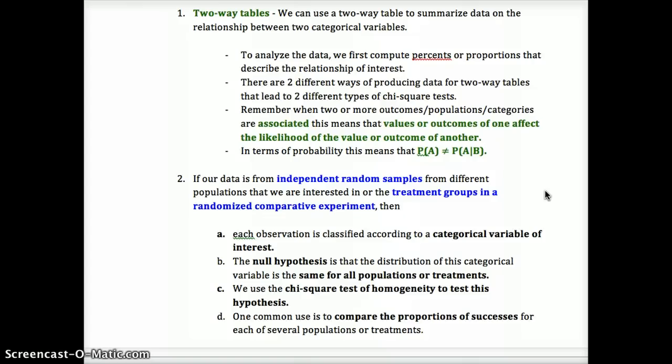If our data is from independent random samples from different populations and the treatment groups are in a randomized comparative experiment, those are things we need for our test of homogeneity. In terms of probability, this is what we mean by independence. Event B occurring doesn't affect the probability of event A, and vice versa.